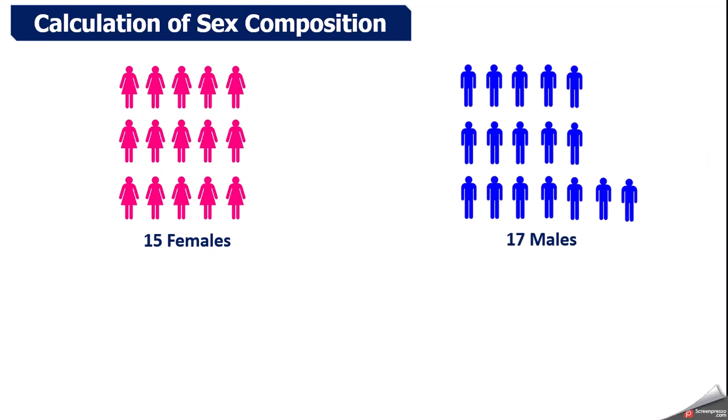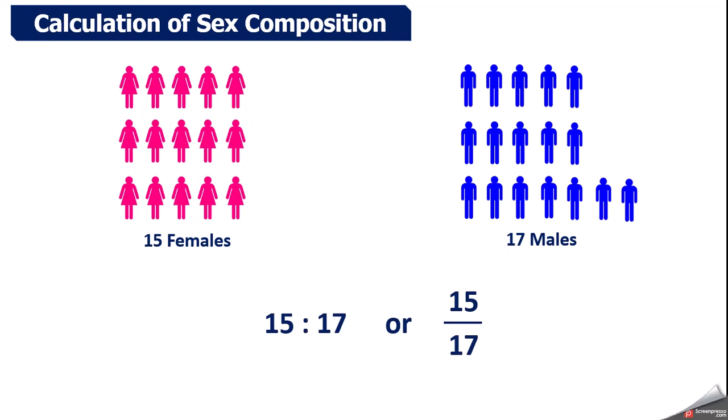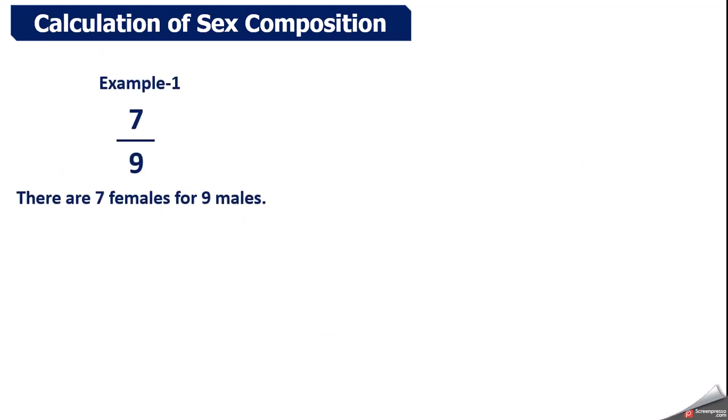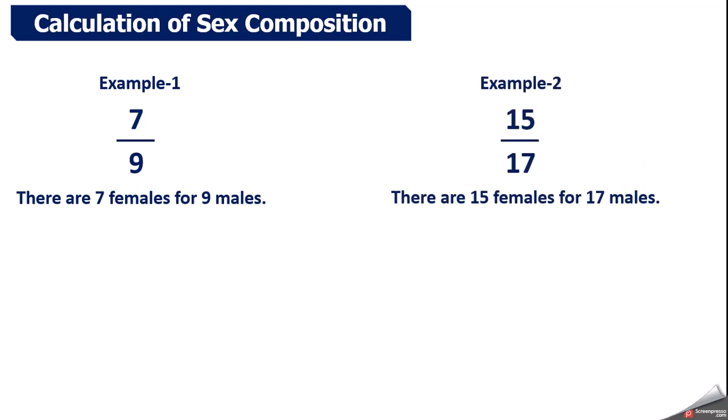Another example: this time there are 15 females and 17 males. The ratio for 15 females and 17 males is written as 15:17 or 15 upon 17. This means there are 15 females for every 17 males. This is how ratio is written for any country's male and female population, whether in lakhs or crores.